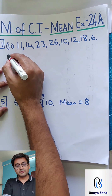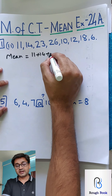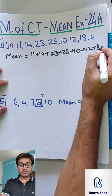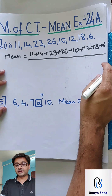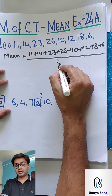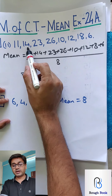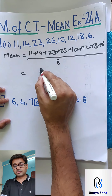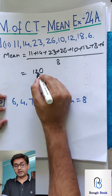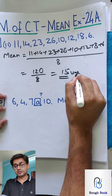Calculate the mean of this — it is very simple. You are just going to add all of them and then divide by the number of observations. There are 8 observations. Adding: 8 plus 10 is 16, then 20, 30... the total comes to 120, divided by 8. So the mean should be 15 units.